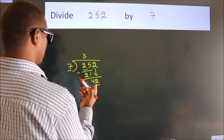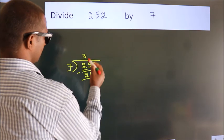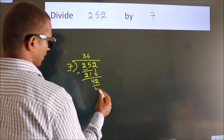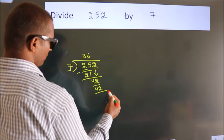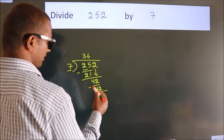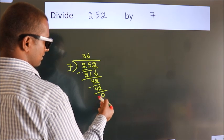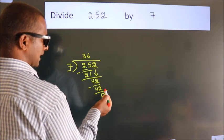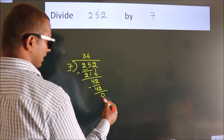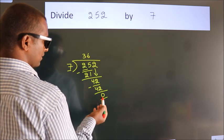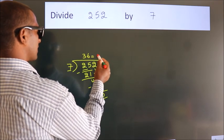When do we get 42? In 7 table, 7, 6, 42. Now we subtract. We get 0. After this, no more numbers to bring it down. And we got remainder 0. So this is our quotient.